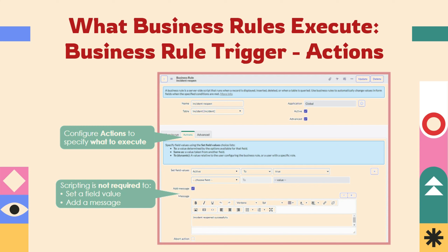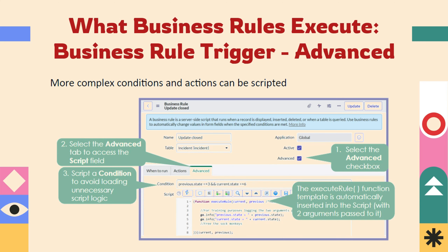Under the action tab, we can see what to execute. We can set field values and set messages to be displayed on certain records — no script is required for this. We can just set the message and set values without writing any script using the 'set values' option. The advanced tab is activated when we need to write complex conditions or action scripts. We can use the advanced conditions checkbox to define conditions and scripts for execution as part of a project.